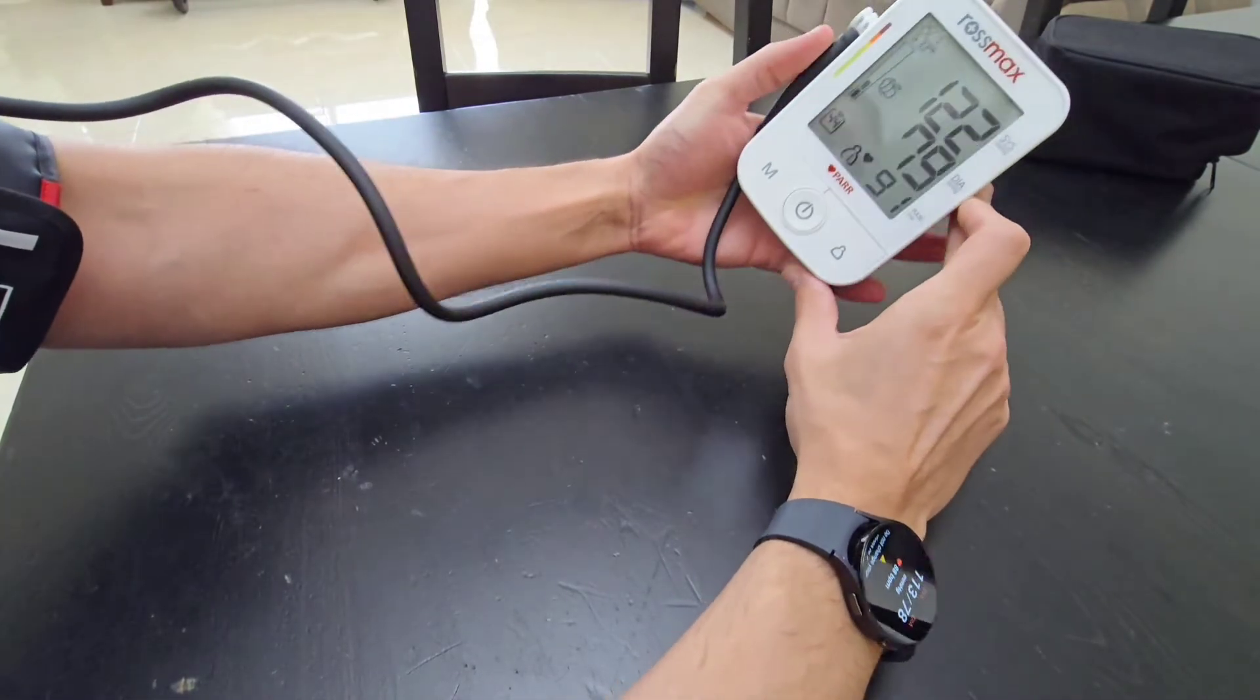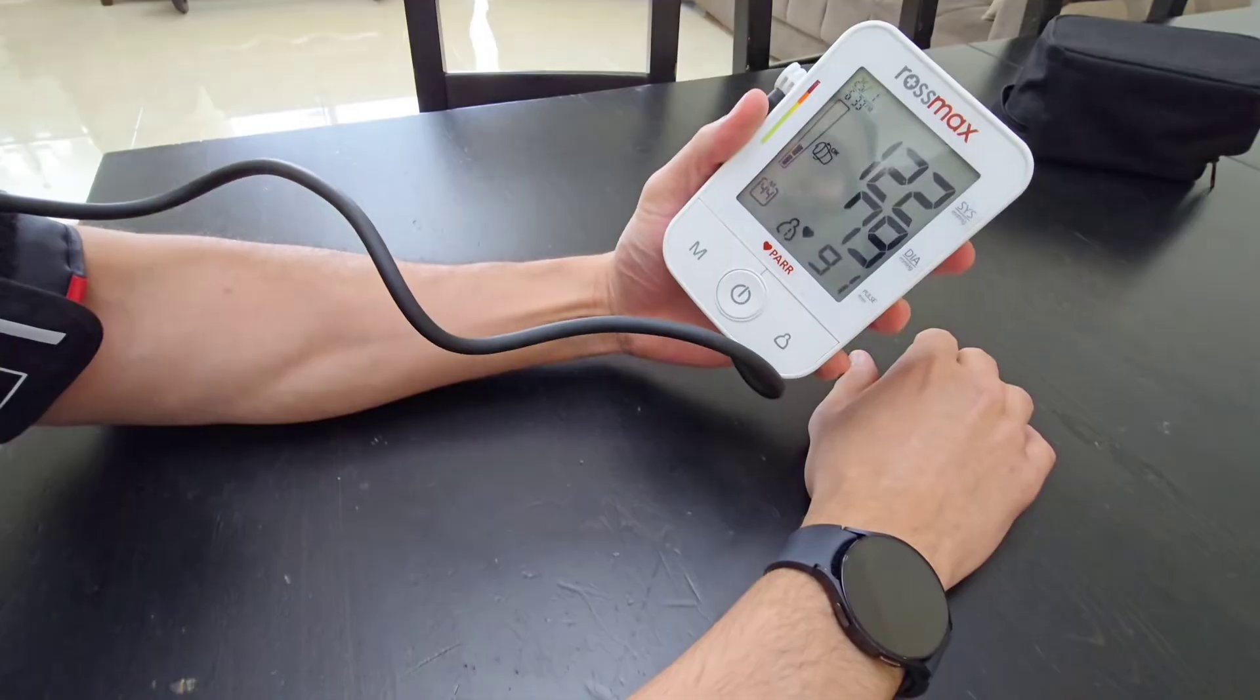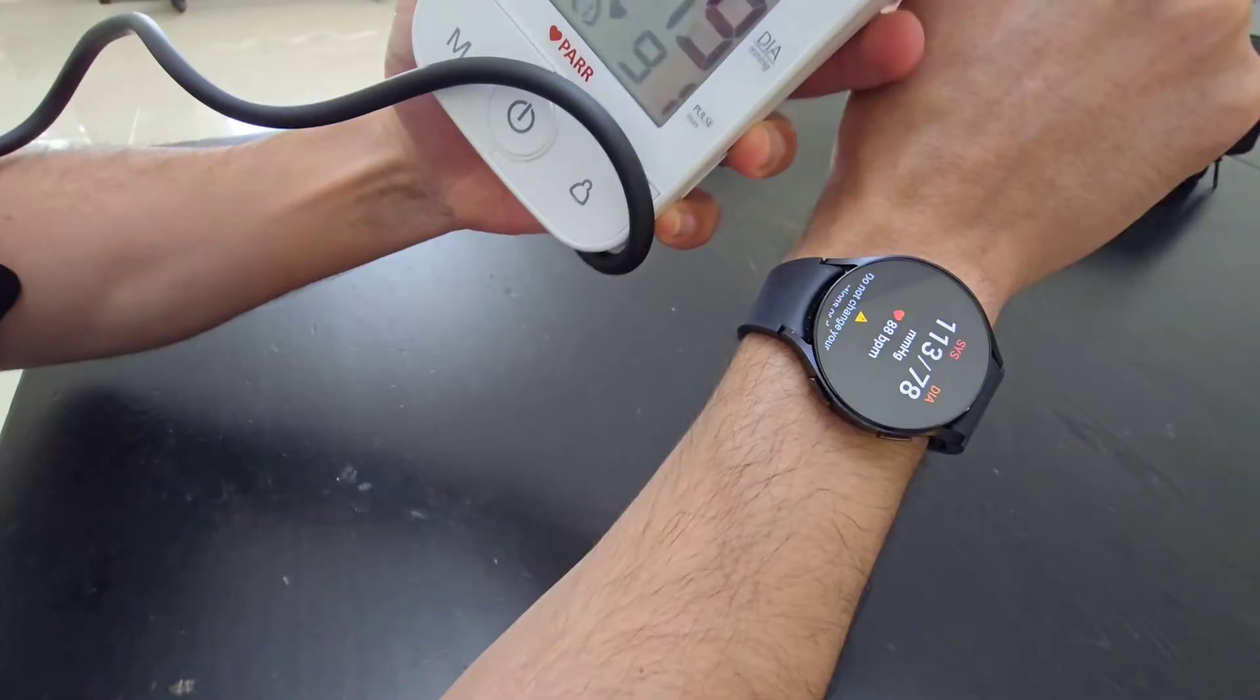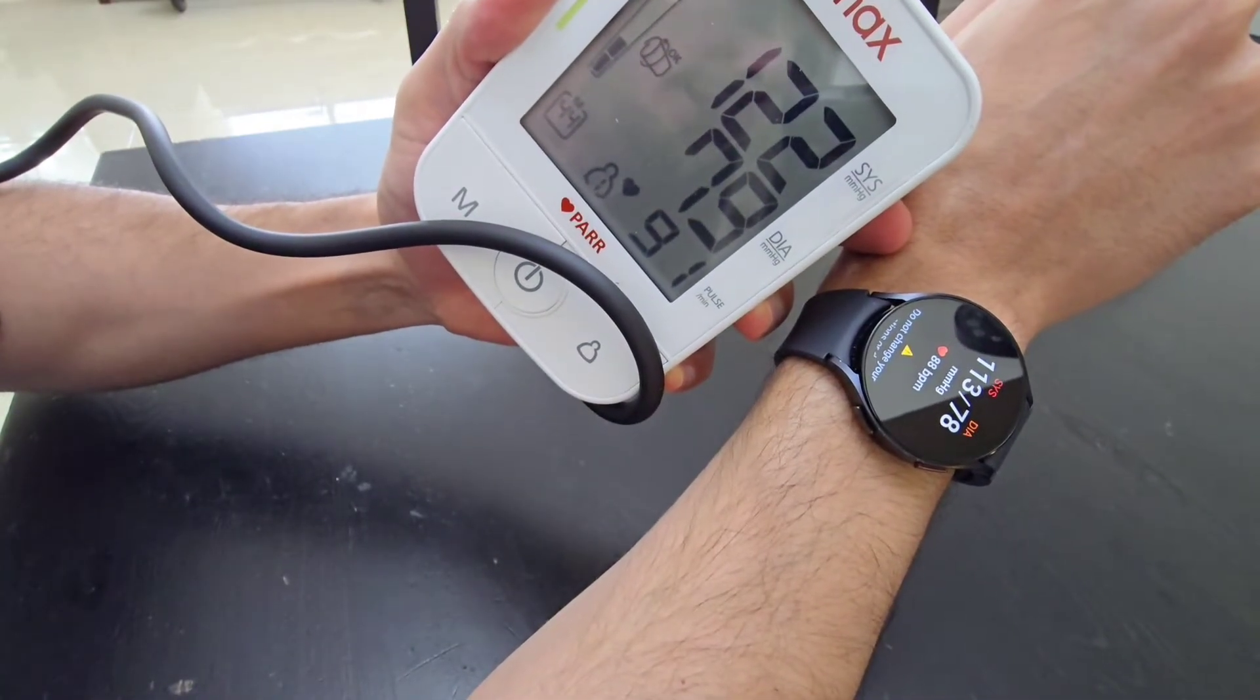Okay, so we got the results. The blood pressure monitor says 122 over 79 and the watch says 113 over 78.